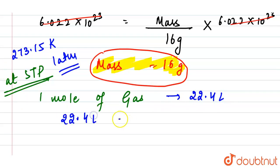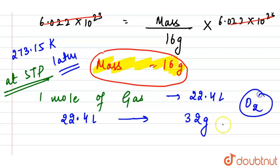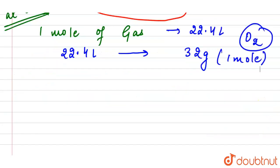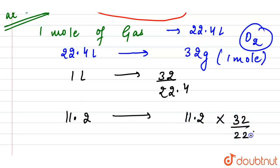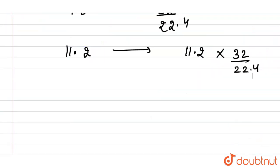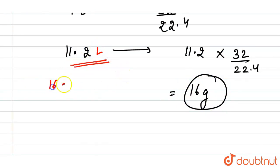22.4 liters of oxygen weighs 32 grams, meaning one mole. So 1 liter weighs 32/22.4 grams. Therefore, 11.2 liters weighs 11.2 × 32/22.4 = 16 grams. So 11.2 liters of oxygen weighs 16 grams.